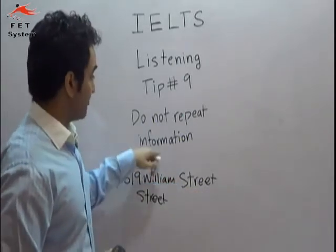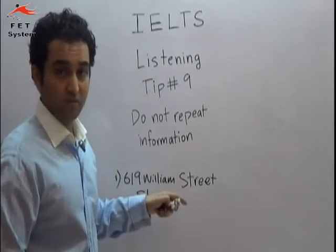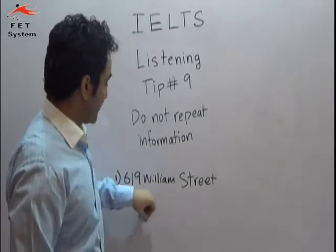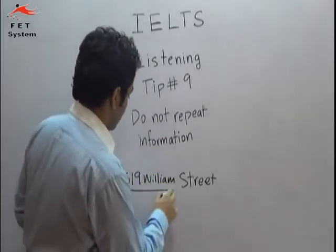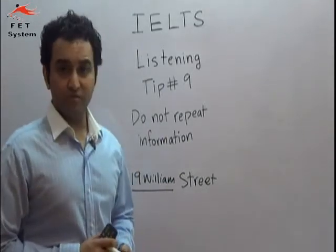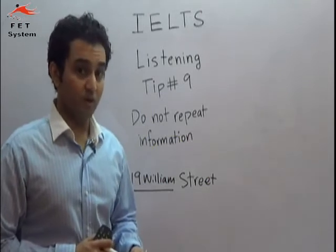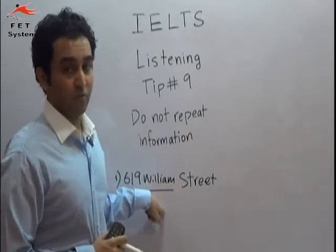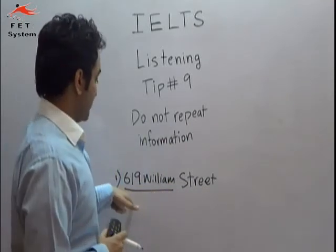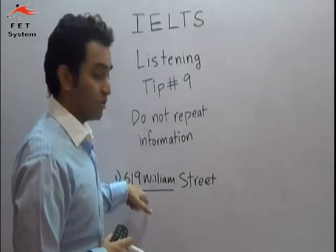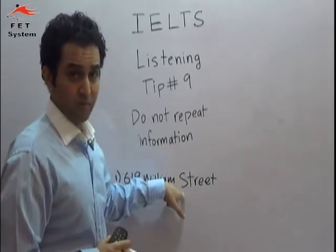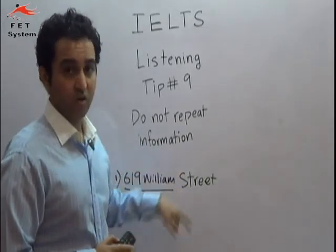You don't repeat the information, so you just write '619 William' as your answer. Also, as mentioned in the previous video, if the instructions say not to write more than two words and you end up writing 'Street' as well, that would be a wrong answer. So please look at the instructions carefully — if you repeat information that is already given, you are going to get your answer wrong.